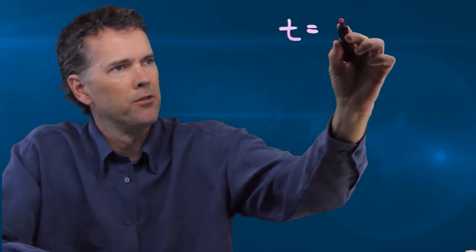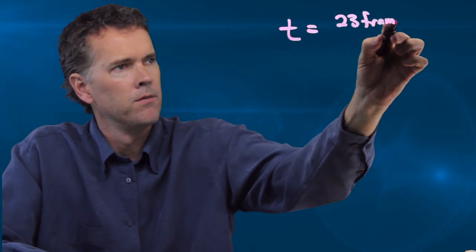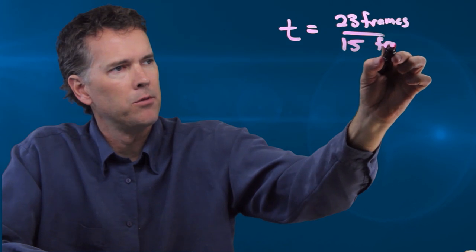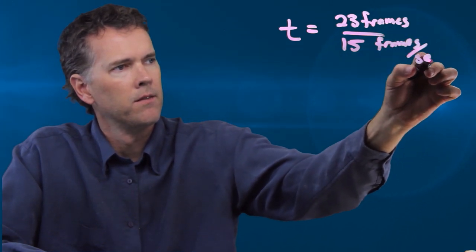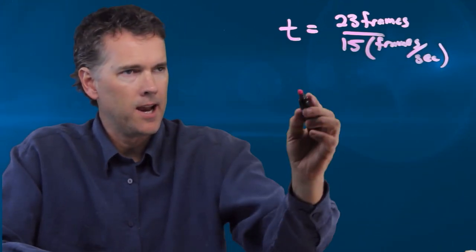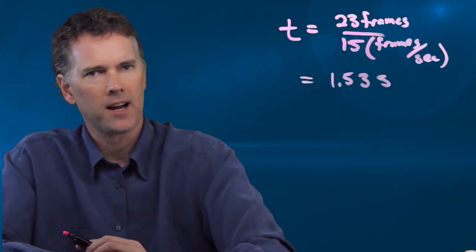So, if we know the frame rate of the camera, then we can calculate how long in the air I am. And it turns out that this camera is 15 frames per second. So the time is going to be 23 frames divided by 15 frames per second. And that's going to tell me how long in the air I am. And if you run those numbers, you get 1.53 seconds.